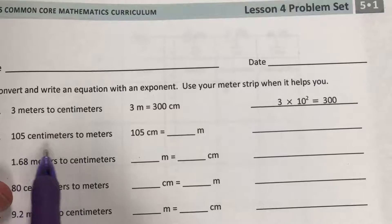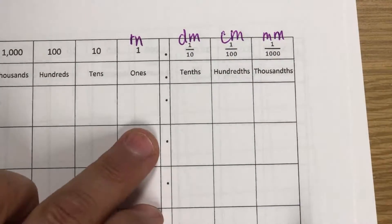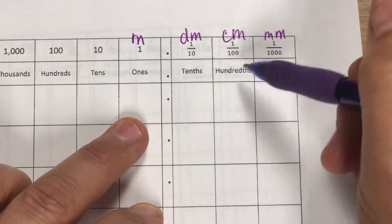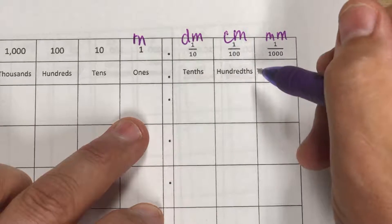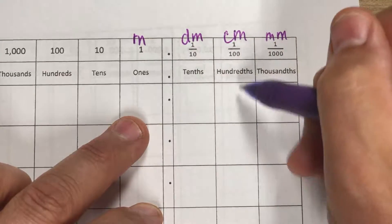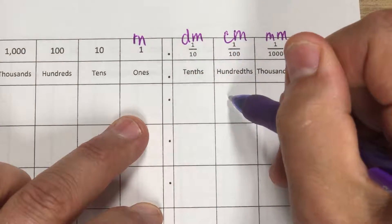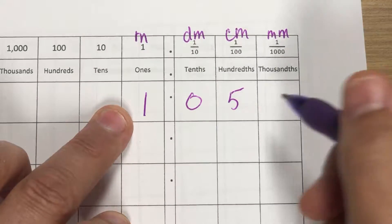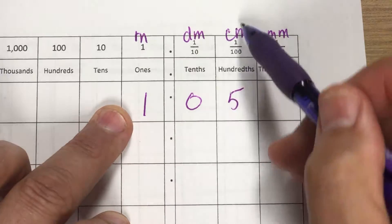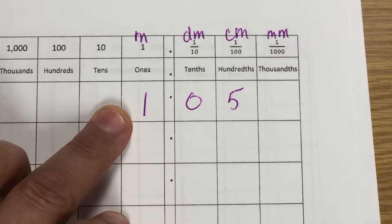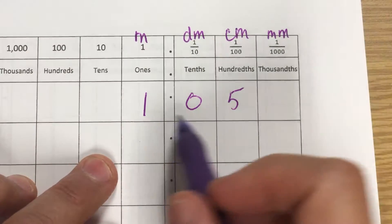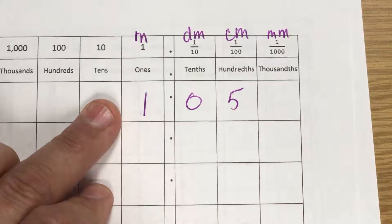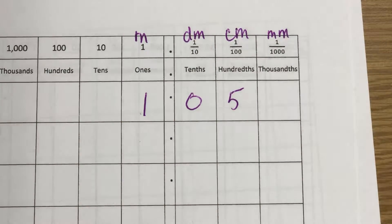To convert 105 centimeters into meters, I write 105 centimeters by placing the last digit — the five — into the centimeter spot, then zero, then one. Looking at what the number reads in meters, it becomes one and five hundredths of a meter.